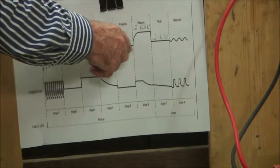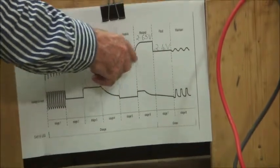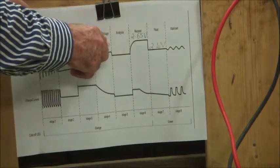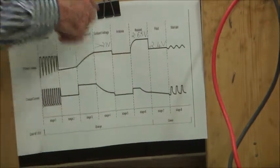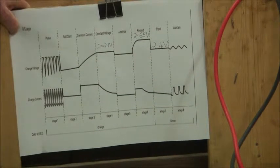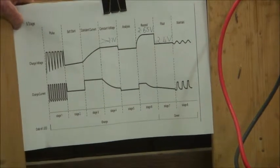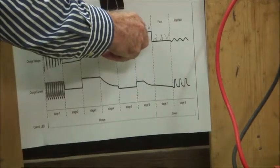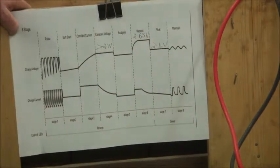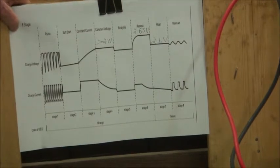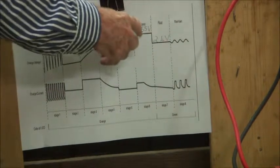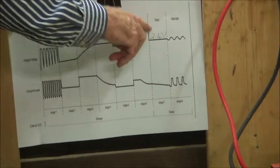It will then go in this analysis stage where it will be checking the battery's condition. If the battery is more than 2.1 volts per cell, the charger will then go into what we call recondition mode, and then it will charge the battery up to 2.65 volts per cell, which will stir up all the contaminants on the plates, and then it will eventually reach this voltage here.